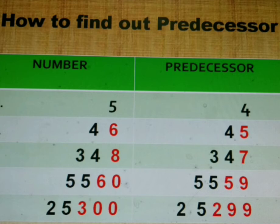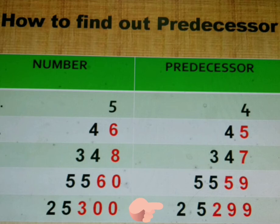Next number: twenty-five thousand, three hundred. In this number, ones are zero, tens are zero, and we have to change the ones, tens, and hundreds place. That means three hundred before is two hundred and ninety-nine. So, thousands place write as it is, and in place of three hundred we write two hundred and ninety-nine. Predecessor of twenty-five thousand, three hundred is twenty-five thousand, two hundred and ninety-nine.